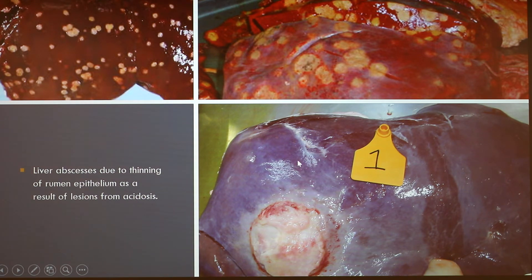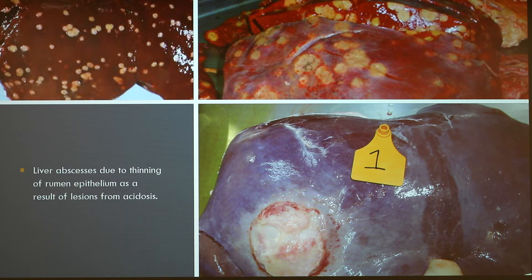Liver abscesses are a very common manifestation. The rumen epithelium acts as a protective barrier between the rumen environment and portal circulation. However, ruminal bacteria can leak into the bloodstream through areas of the rumen wall thinned by lesions, and are then transported to the liver where they cause severe abscesses. Rumen mucosal damage is another consequence associated with rumen acidosis. The rumen mucosa plays a vital role in whole-animal energy balance through the transport and metabolism of rumen-derived volatile fatty acids.